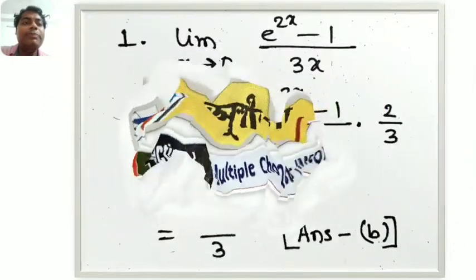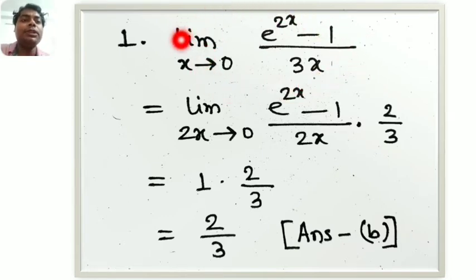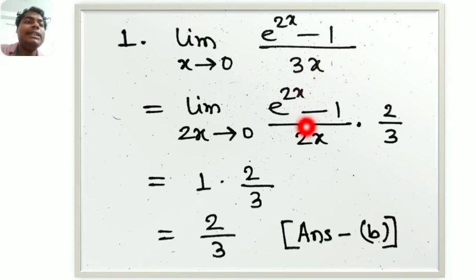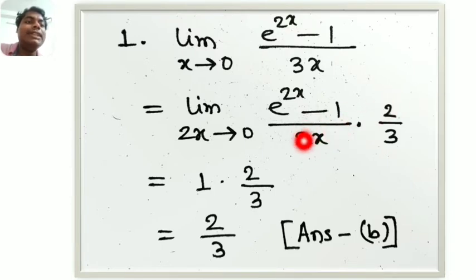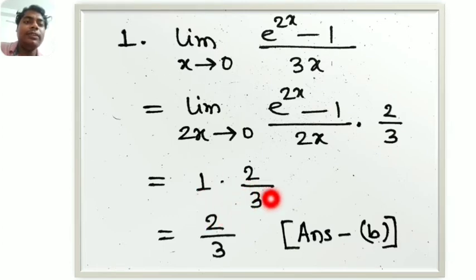The first question: the limit x tends to 0 of e to the power 2x minus 1 by 3x. Let us calculate. We say 2x is 2x, so we rewrite this with 2x in numerator and denominator.